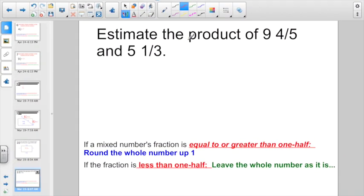Here we have to estimate the product of 9 and 4/5 and 5 and 1/3. Well, 4/5 is more than a half. Hopefully you see that. So I'm going to think of this guy as 10. 5 and 1/3. 1/3 is less than a half, so I'm going to keep this as 5. And product means the answer when you multiply, so the estimated product would be simply 50.